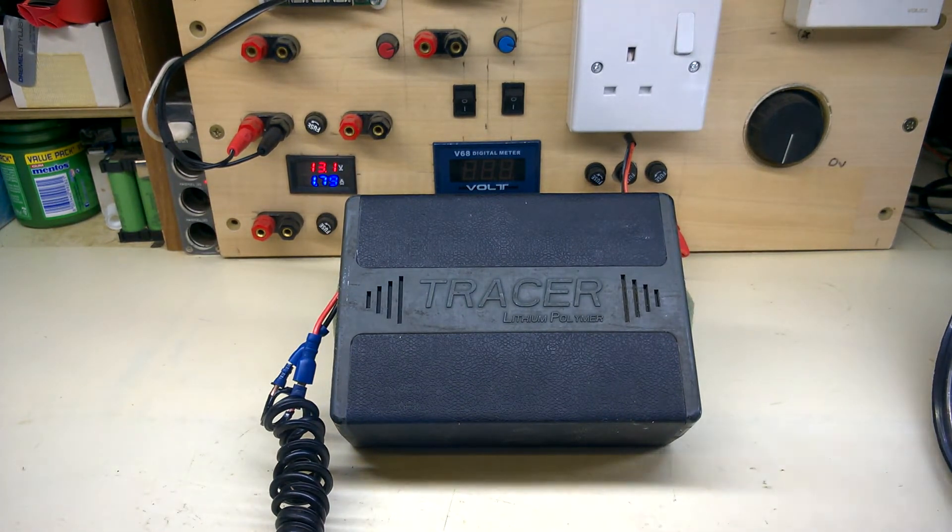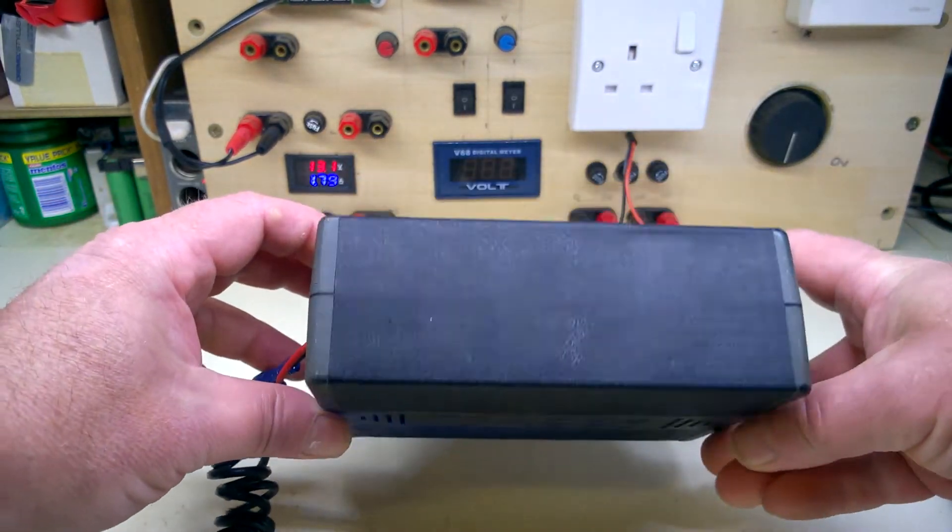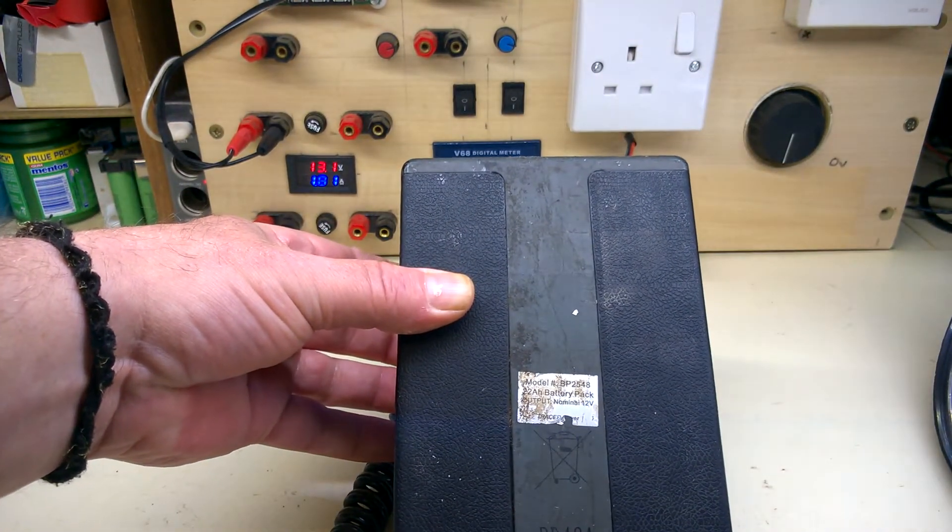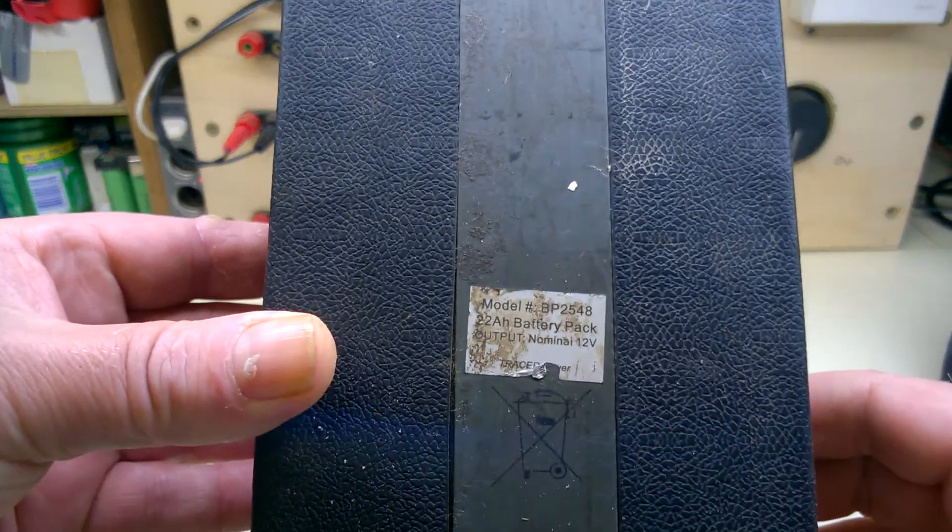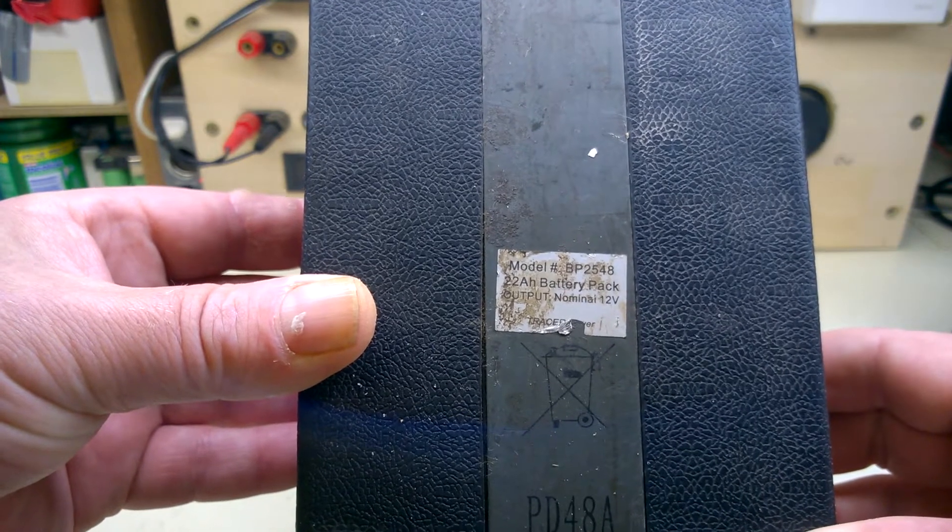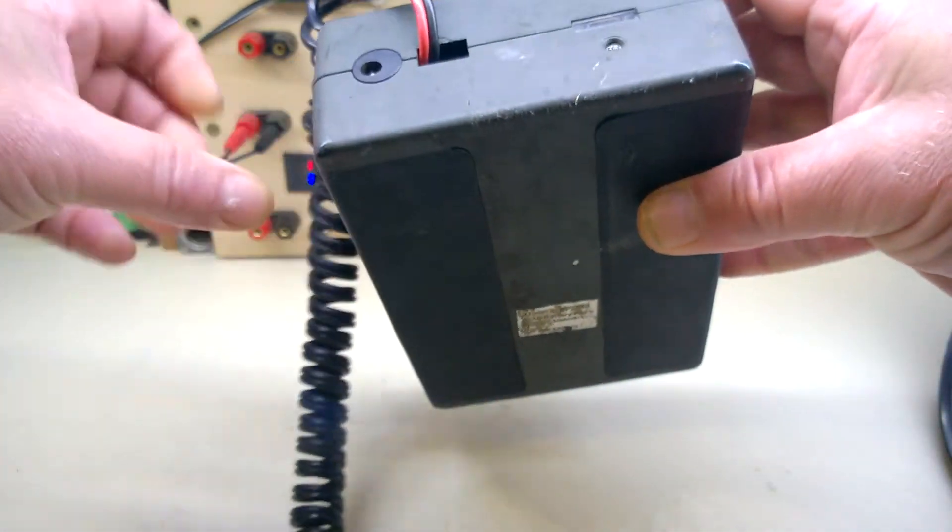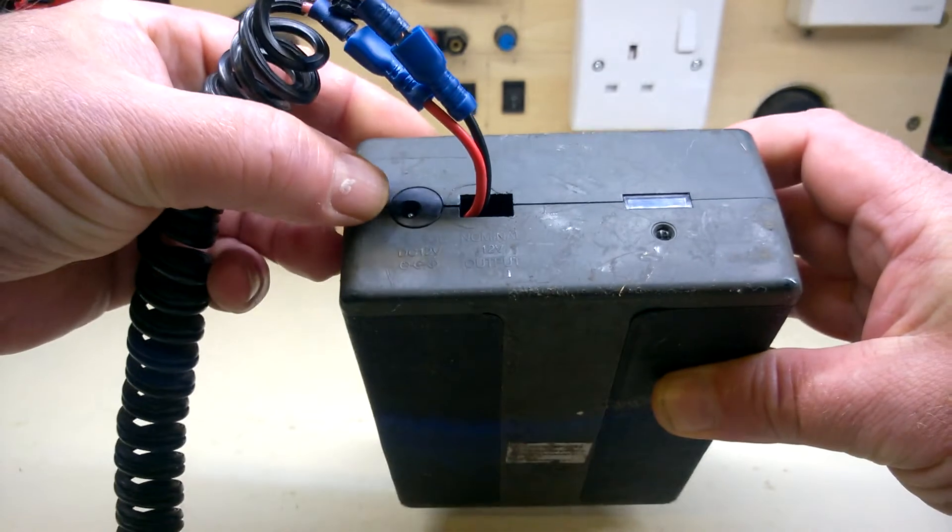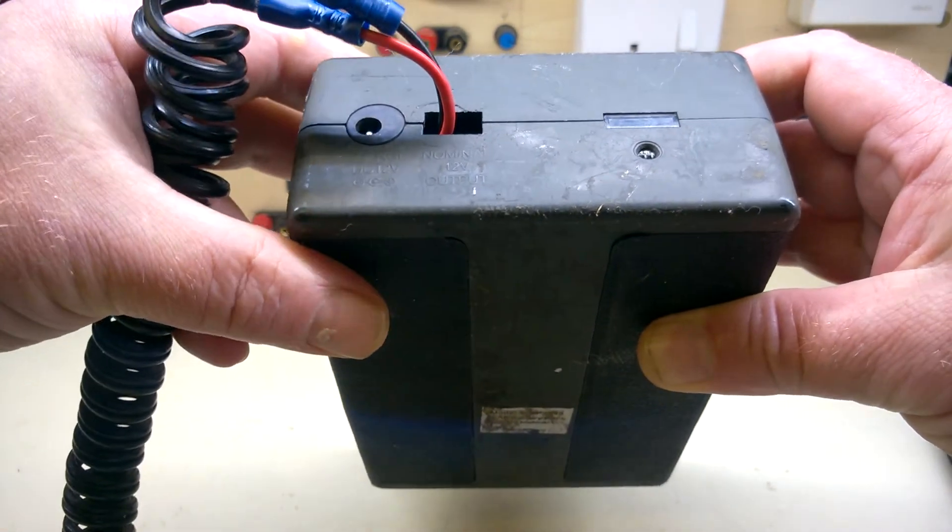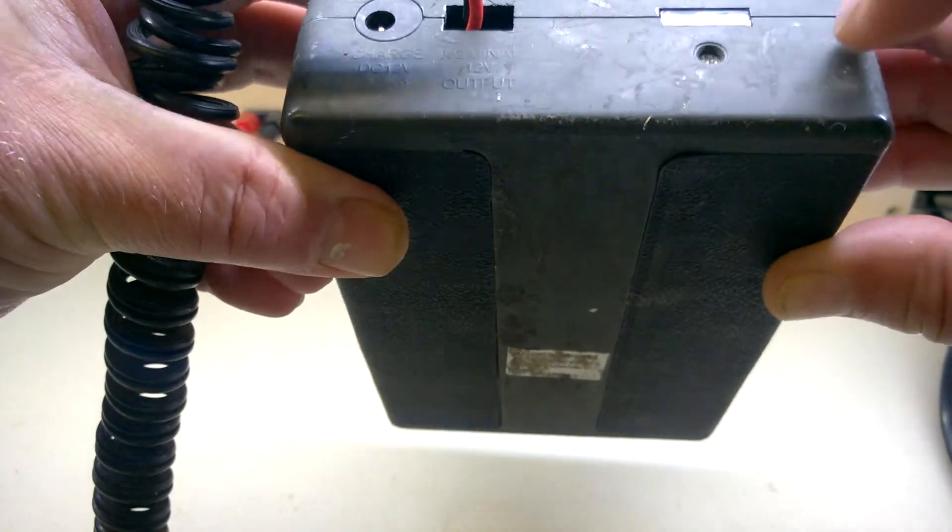Let me have a look around the pack. Tracer, same thing. This has been battered. It says 22 amp power output, nominal 12 volts. Okay, probably a charging port.